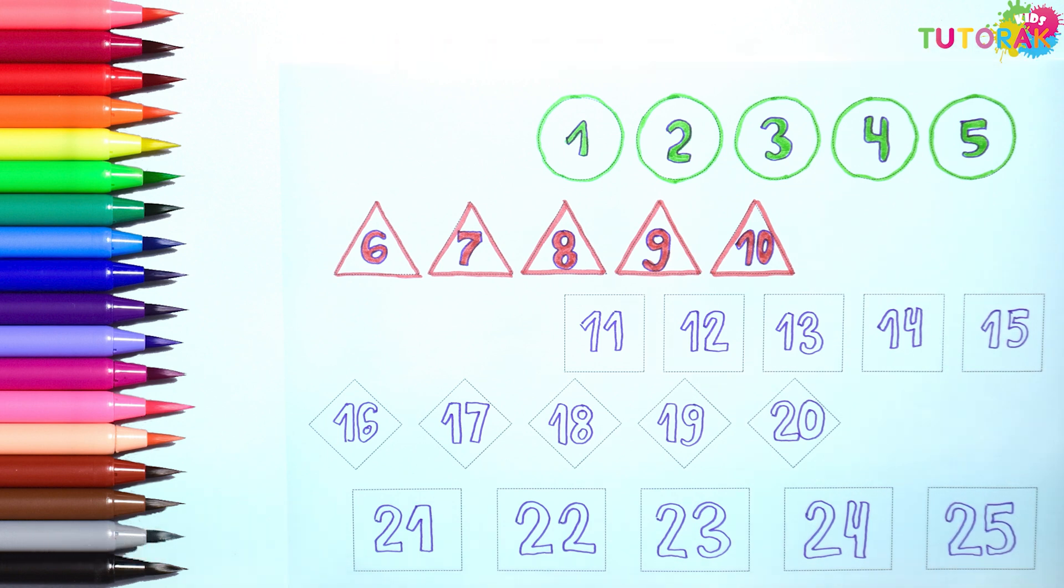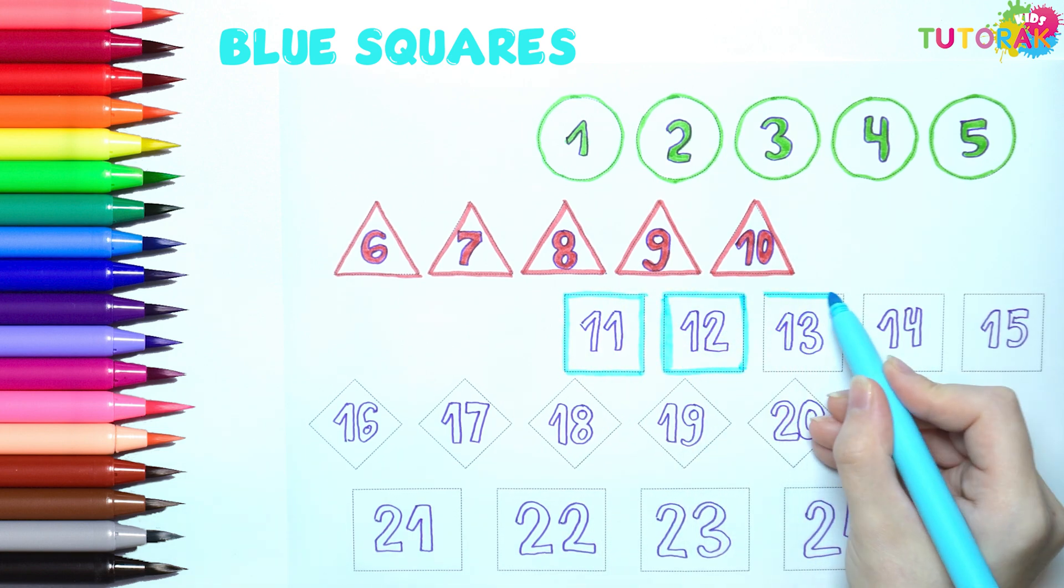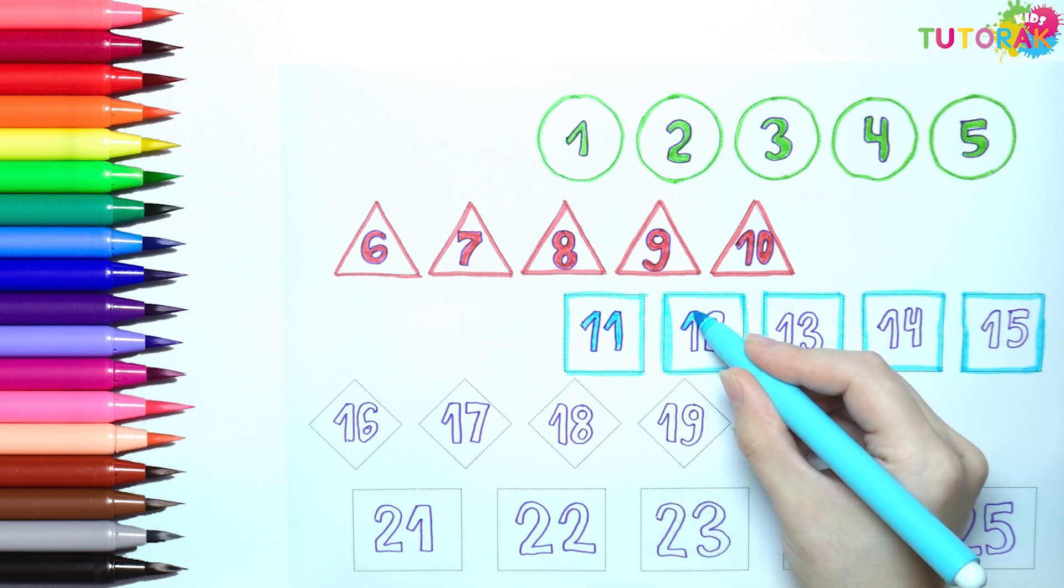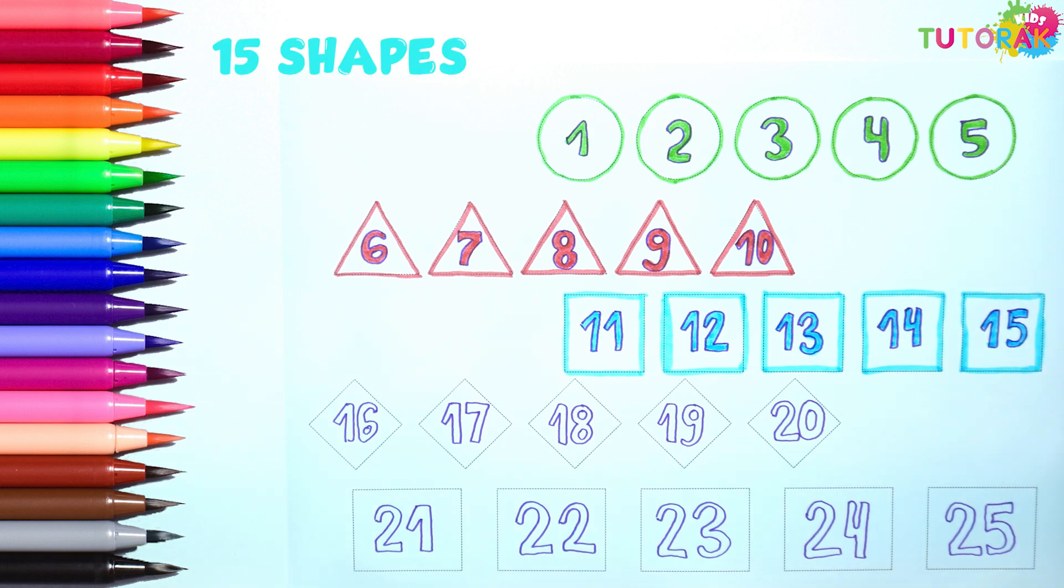Now it's time to add squares. We have 1, 2, 3, 4, 5 blue squares. And that makes 15 shapes.